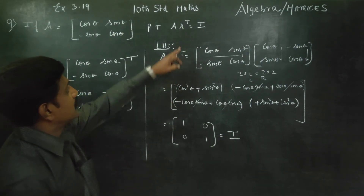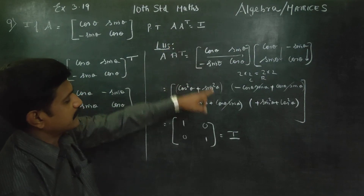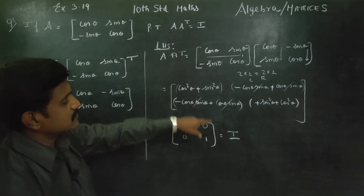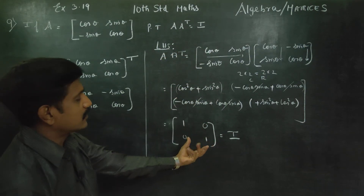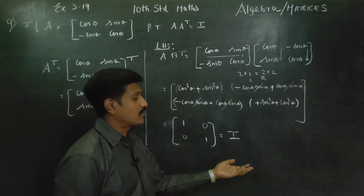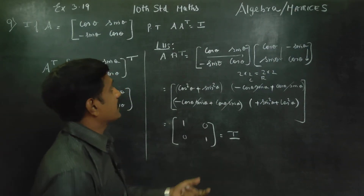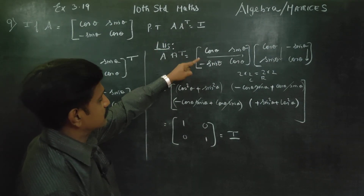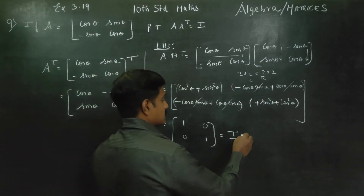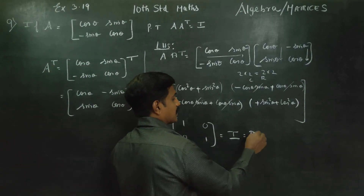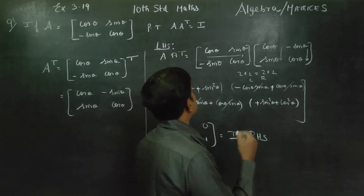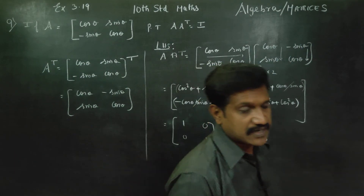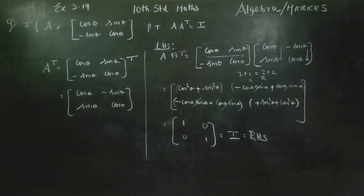The result is the identity matrix — unit matrix I. So A into A transpose equals I. We started from LHS and we are ending at RHS. Hence proved. Thank you.